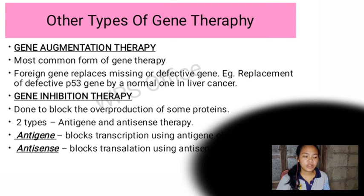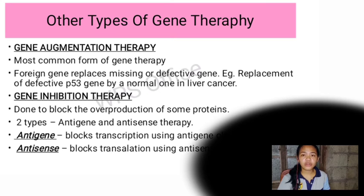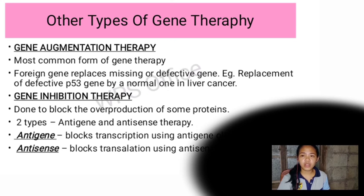Other types of gene therapy include gene augmentation therapy, the most common form of gene therapy, where a foreign gene replaces a missing or defective gene. For example, replacement of a defective gene by a normal copy in liver cancer. Gene inhibition therapy is done to block the overproduction of some proteins, and there are two types of gene inhibition therapy.